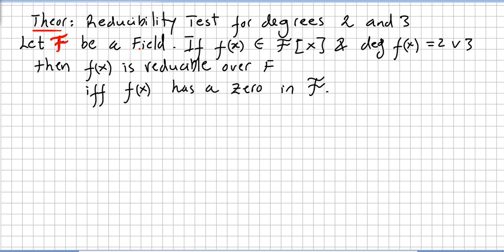Let F be a field. If f(x) is a polynomial in the field of polynomials F[x], and the degree of f(x) is 2 or 3, then f(x) is reducible over the field if and only if f(x) has a zero in the field. We used that fact before: if there is an element a in the field with f(a) = 0, then the polynomial is reducible over F.